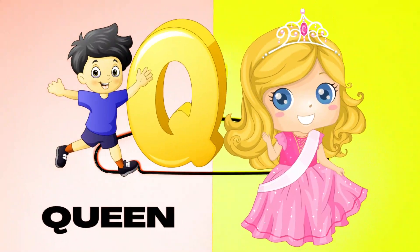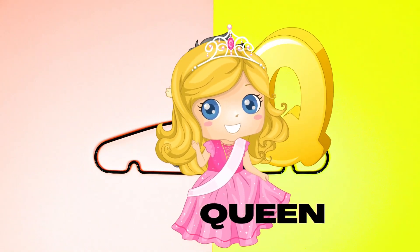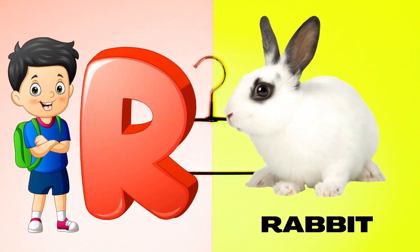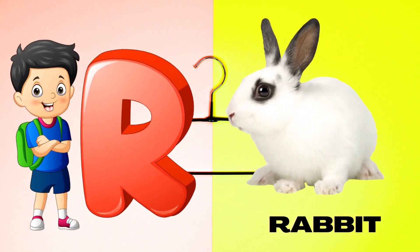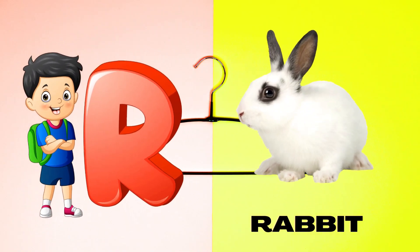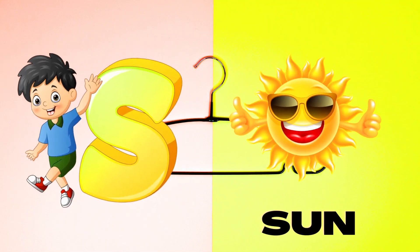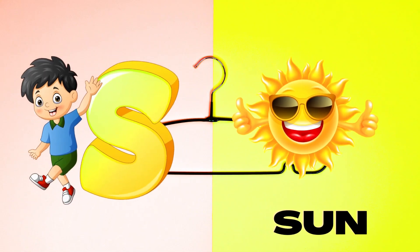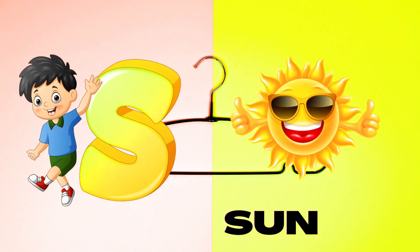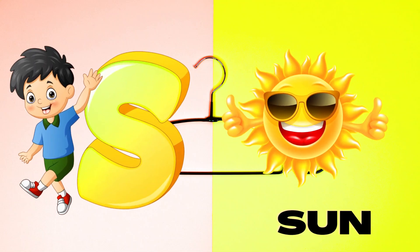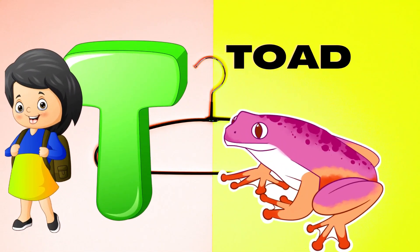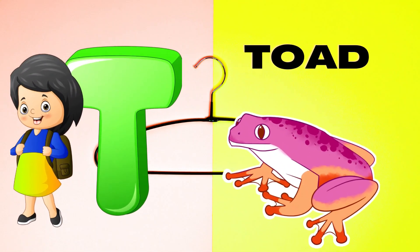Q is for Queen, Q-Q-Queen. R is for Rabbit, R-R-Rabbit. S is for Sun, S-S-Sun. T is for Toad, T-T-Toad.